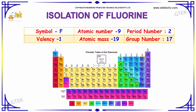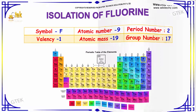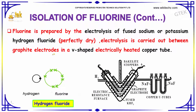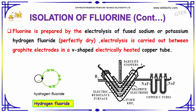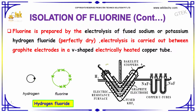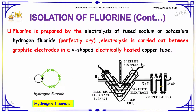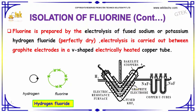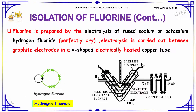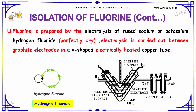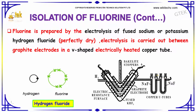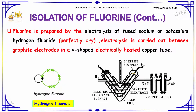The group number is 17. Fluorine is prepared by the electrolysis of fused Sodium or Potassium Hydrogen Fluoride. The electrolysis is carried out between graphite electrodes in a V-shaped electrically heated copper tube. You are able to see the V-shaped device with a graphite electrode.